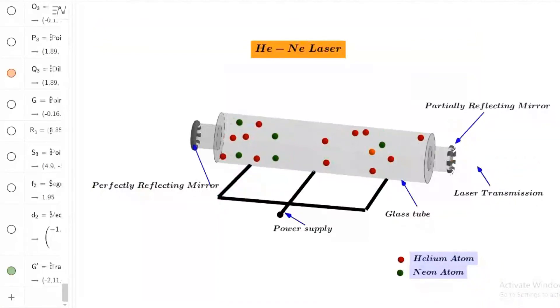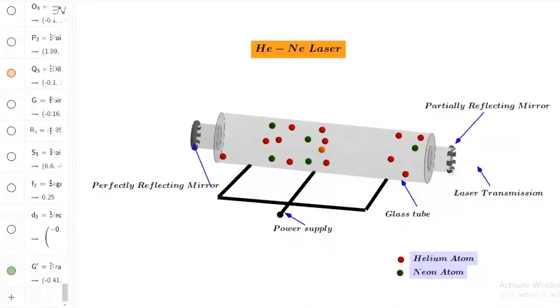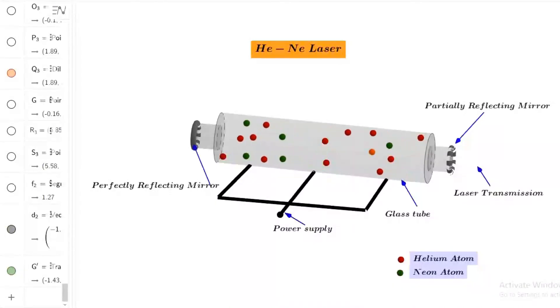Now, let's see the construction. It consists of a long discharge tube of length 50 cm and diameter 1 cm containing mixture of Helium and Neon in the ratio of 10 to 1 and the pressure inside the tube is about 1 mm of mercury. One end of the tube is fitted with perfectly reflecting mirror and other end with partially reflecting mirror.